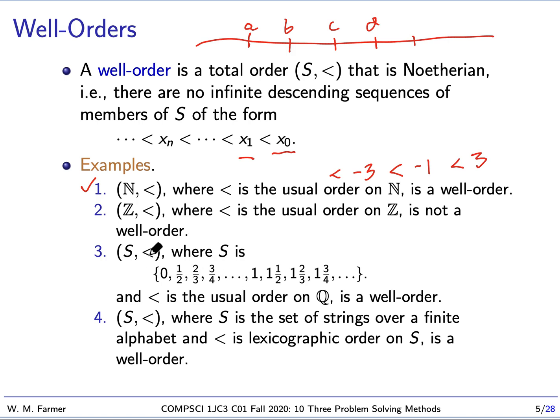An interesting well-order is this one for number 3. It's a set S, which is a set of rational numbers. If we draw them on the line, we start with 0, then we go to 1/2, then we go to 2/3, 3/4, 4/5, and we just keep going. We have an infinite number. And then we also include 1, 1 and 1/2, 1 and 2/3, and so forth.